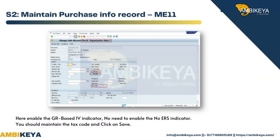S2 — Maintain Purchase Info Record, transaction ME11. Enable the GR-Based IV indicator. There is no need to enable the No ERS indicator. You should also maintain the tax code, then click on Save.